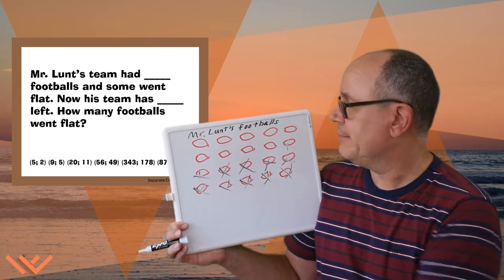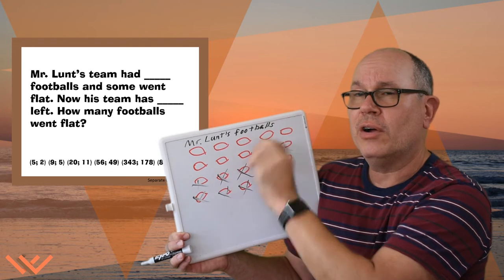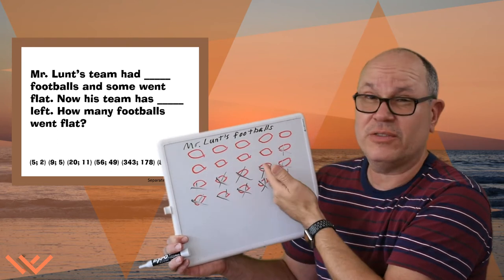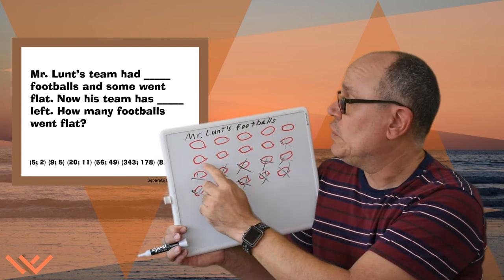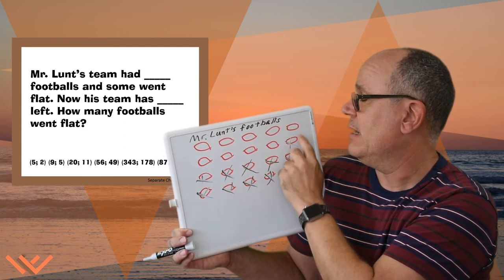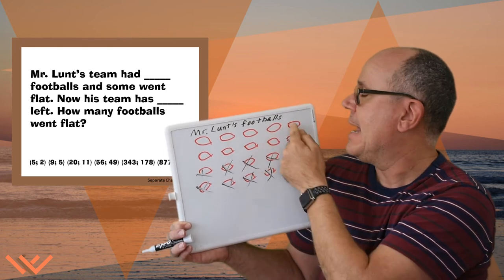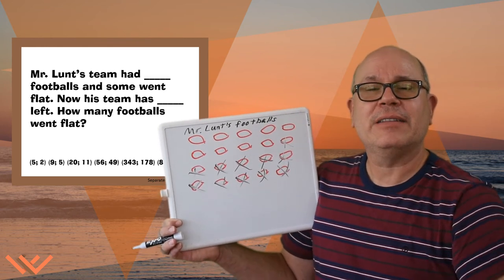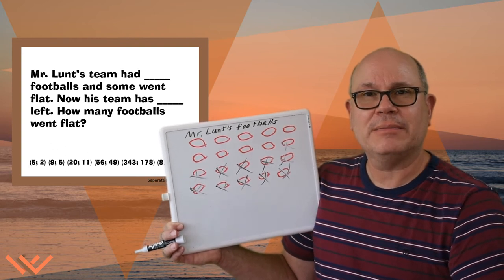Let's make this easy. I can see these are 2 rows — one of them has 5 and the other one has 4, but we can count by 2's: 2, 4, 6, 8 — doesn't have one there — so we're going to count on 9. That's how many went flat. 9 footballs went flat.